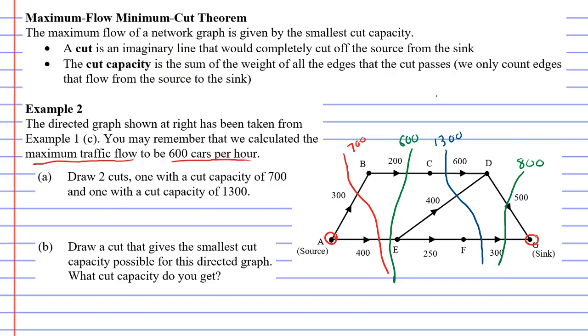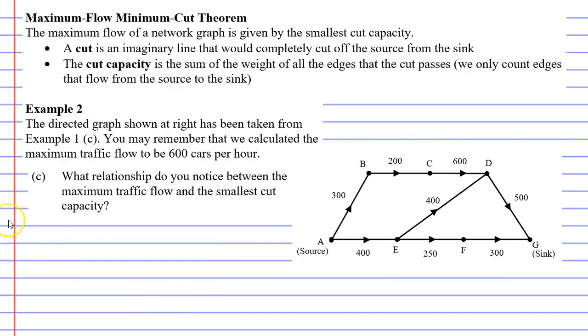So I'll write that down as our answer to B: 600, and I'm going to write it as cars per hour, because this network diagram represents traffic flow. Now what's so special about this number here, this 600? Some of you might have noticed that that's the maximum traffic flow that we calculated in example one. 600 cars per hour. Isn't it interesting that our maximum traffic flow matches our smallest cut capacity? So that brings us to question C.